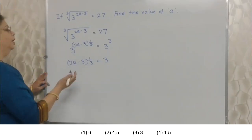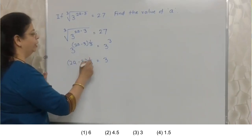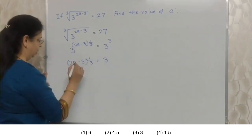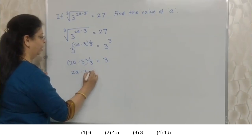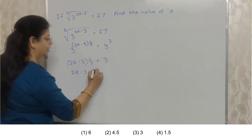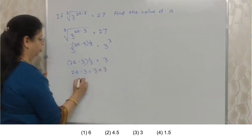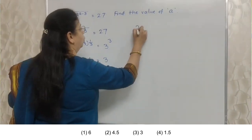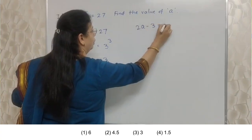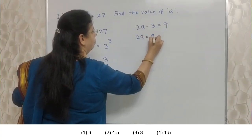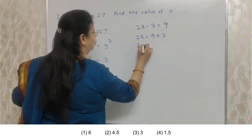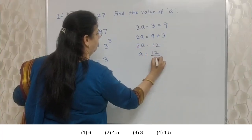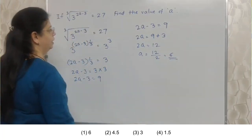2A minus 3 into 1 upon 3 is equal to 3. Now this is very simple. This 1 upon 3, we can take it that side. Or we can multiply it by 3 on both the sides. Both the ways are equally correct. So we will take this that side. So 3 into 3. So 2A minus 3 is equal to 9. 2A is equal to 9 plus 3. So 2A is equal to 12. So A is equal to 12 upon 2. That is 6. 6 is the answer.